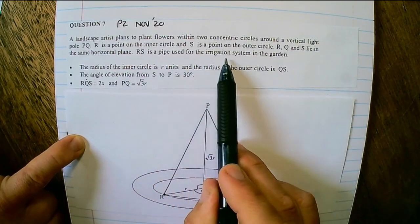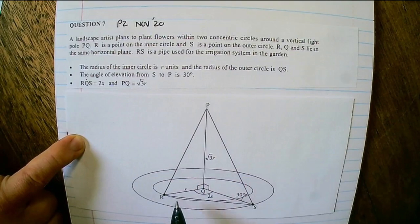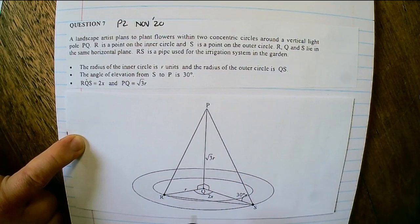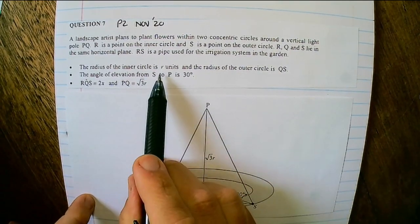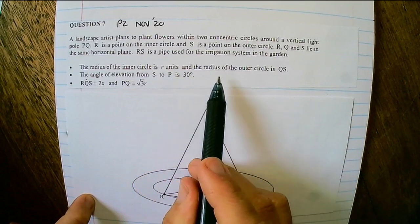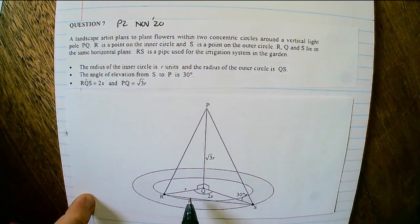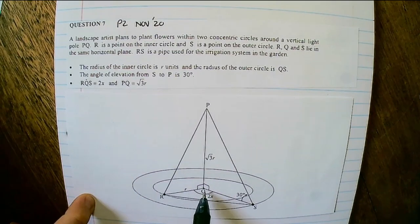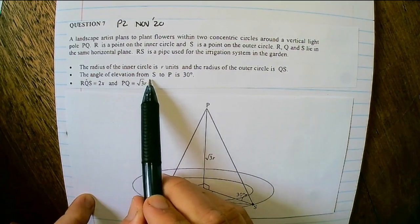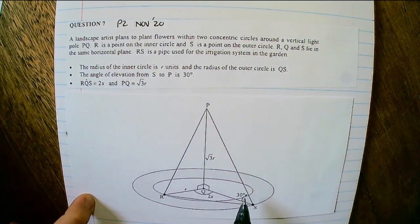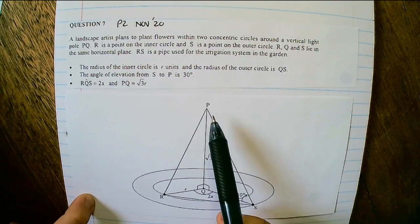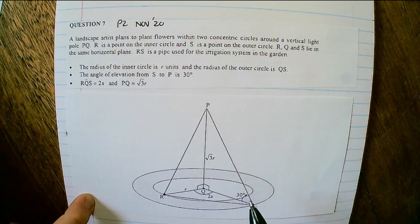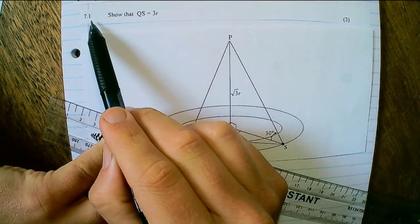RS is a pipe used for the irrigation system in the garden. The radius of the inner circle is R units and the radius of the outer circle is QS. The angle of elevation from S to P is 30 degrees. So that angle is 30 degrees. Angle RQS is represented by 2X and PQ is square root 3R in length.